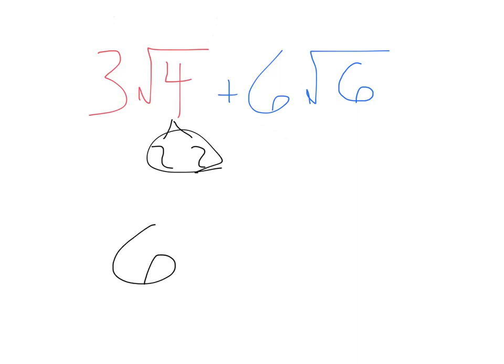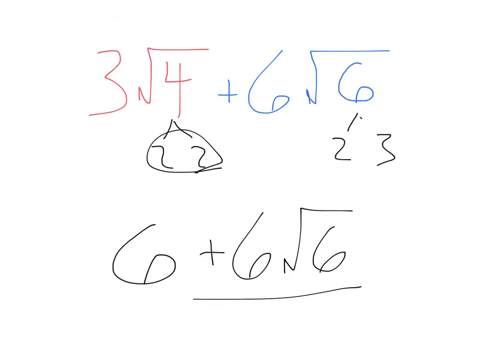There's nothing left inside that square root, so just that six. And this square root of six could break down to two and three, but we can't simplify that. So we leave it as plus six square root of six. Our final answer is six plus six square root of six.